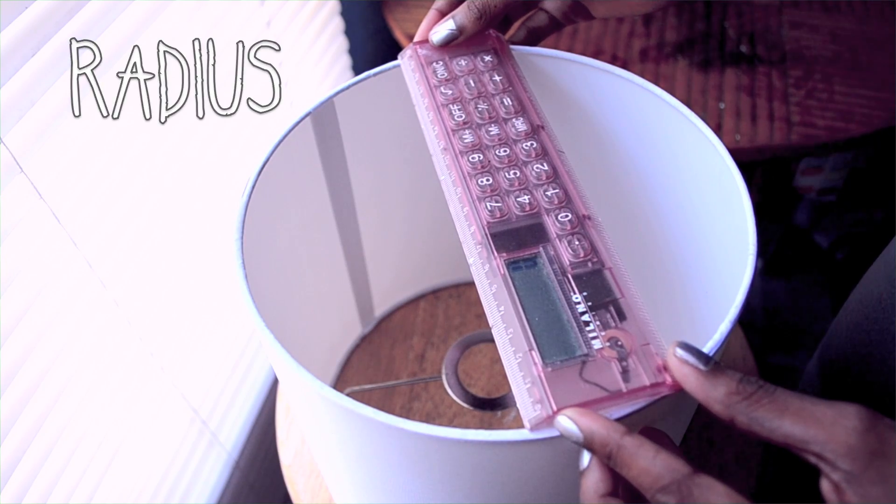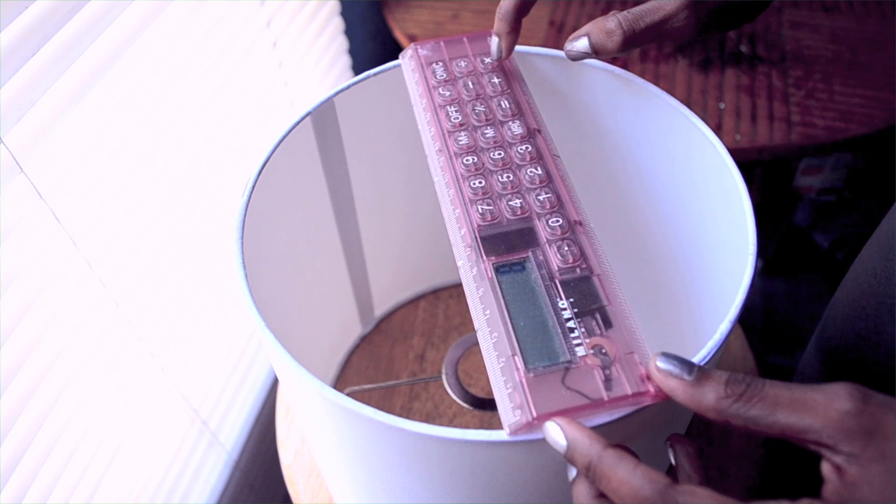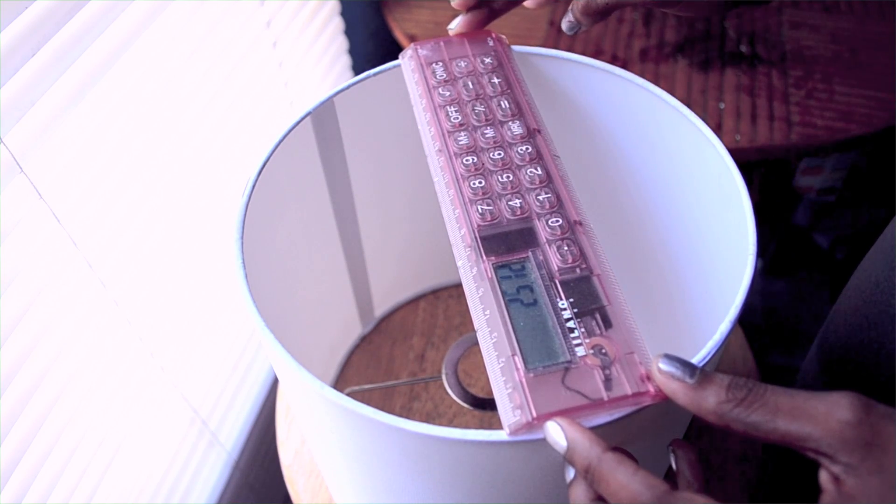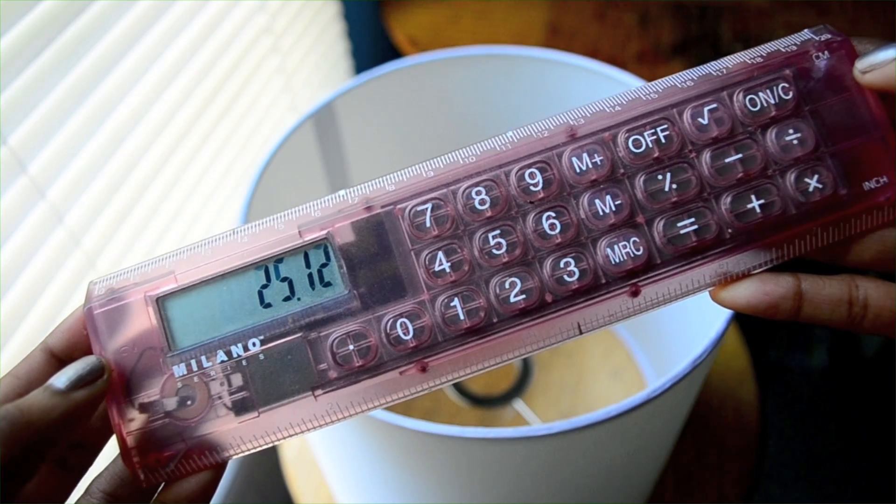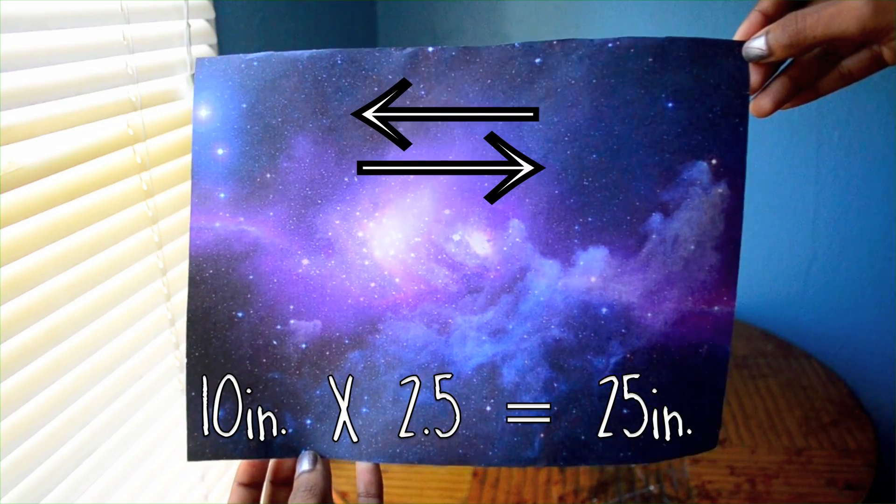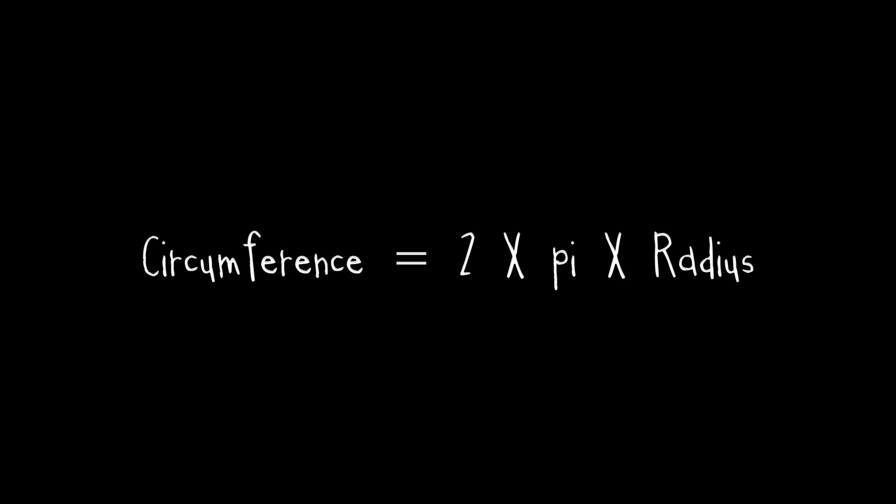The next important measurement is the radius, which I'm using to find the circumference or the distance around the circle. Since I need the design to go around 25 inches and the design that I printed out is only 10 inches, this tells me that I have to print out two and a half of these designs to cover the entire lamp.